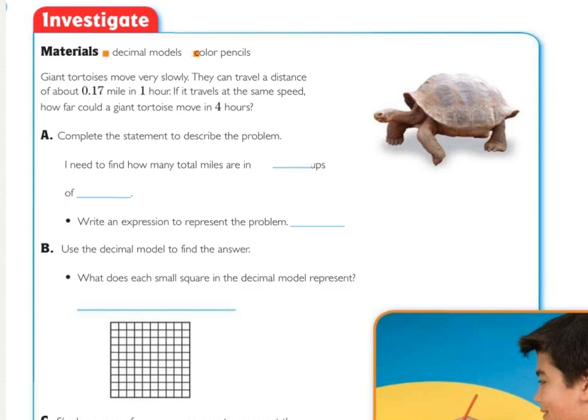For this lesson you need two colored pencils in addition to your regular pencil. Investigate. Giant tortoises move very slowly. They can travel a distance of about 17 hundredths of a mile in one hour. If it travels at the same speed, how far could a giant tortoise move in four hours?